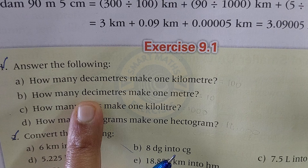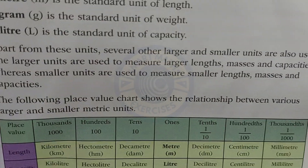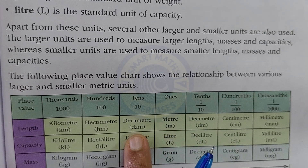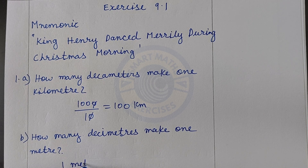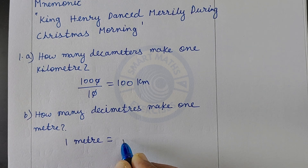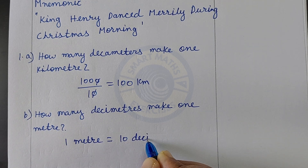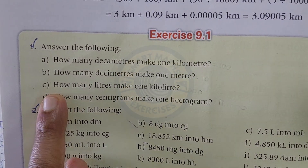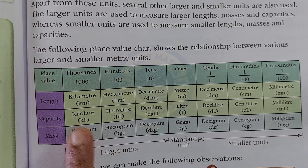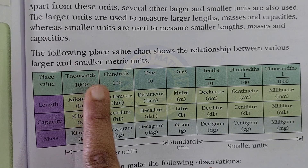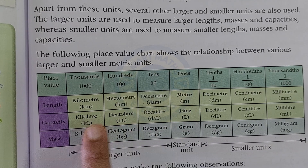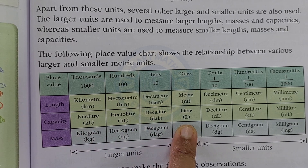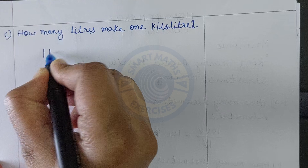How many decimeters make 1 meter? From the table, 1 meter equals 10 decimeters. So the answer is 10 decimeters. Next: how many liters make 1 kiloliter? From the table, going from kiloliter to hectoliter is 10, kiloliter to decaliter is 100, kiloliter to liter is 1000. So 1 kiloliter equals 1000 liters.